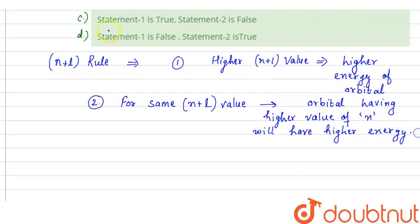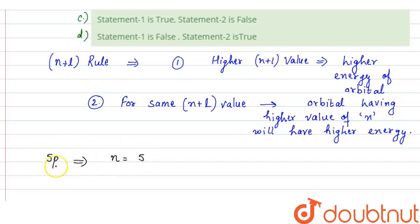We have 5p and 6s. For 5p, the value of n, that is the principal quantum number, is 5 because this is the 5th shell. We are having the p sub-shell, and p sub-shell means the value of l is 1. So from here, n plus l is equal to 5 plus 1, that is 6.